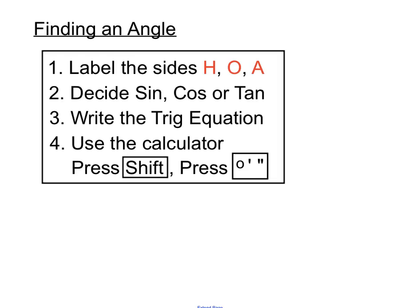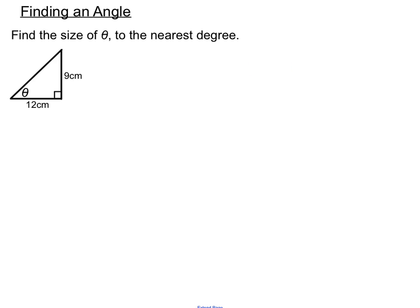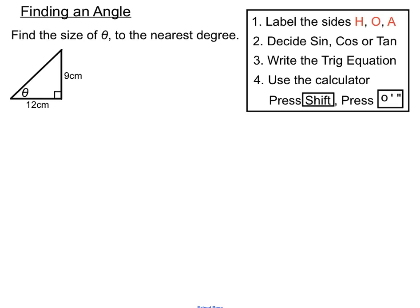So that's finding an angle. Let's have a look at an example. We're finding the size of theta — the missing angle at the bottom of the triangle — to the nearest degree. Let's label our sides. We have the hypotenuse, the longest side. The side opposite to theta is the 9, so we put an O there for opposite. And the adjacent is the remaining side we haven't used yet.